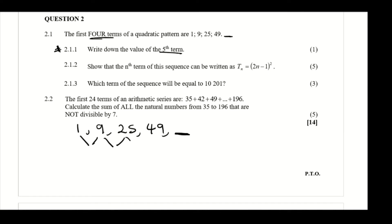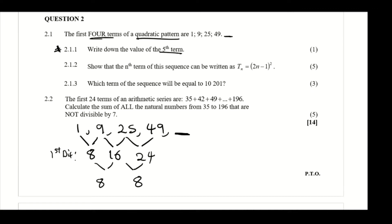To find the next term, we find the differences between the given numbers. 9 minus 1 gives 8; 25 minus 9 gives 16; 49 minus 25 gives 24. These are the first differences of the quadratic pattern. A quadratic number pattern has a constant second difference, which in this case is 8.